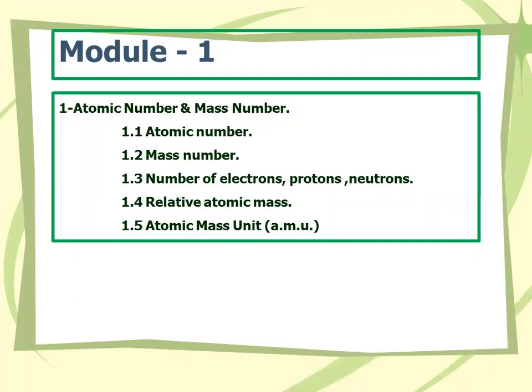In module number one, we are going to study about atomic number and mass number. We will cover what is atomic number, what is mass number, the number of electrons, protons, and neutrons in an atom, relative atomic mass, and how we can calculate relative atomic mass and atomic mass unit.